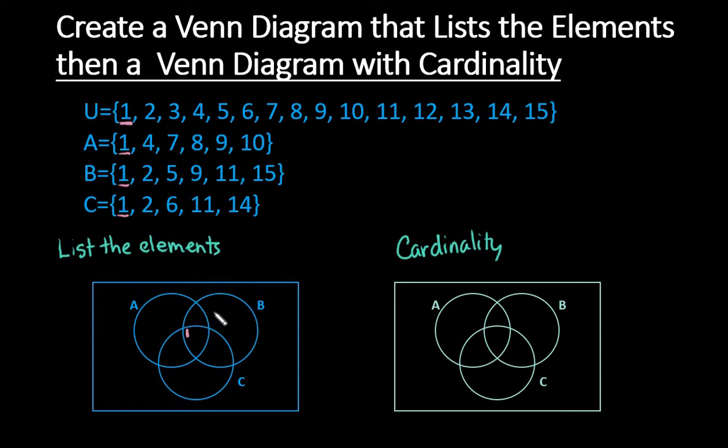Then we would move to number 2. So 2 we can see is in both B and C, but it's not in A. So I would go to find the overlap of just B and C, but not A. So I would put a 2 in this region.